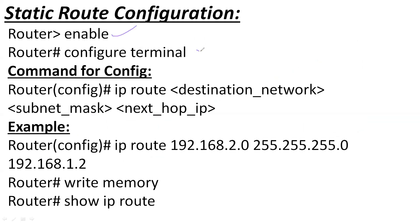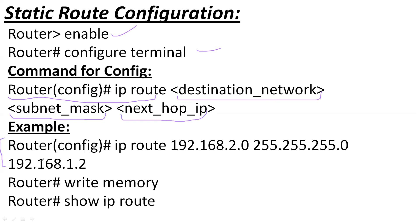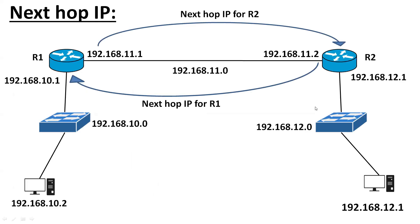Now, how can we configure static routing? First, go to global configuration mode — enable, configure terminal — then put the command 'ip route', followed by the indirectly connected network information, the subnet mask of that network, and the next-hop IP address. For example, if we are configuring the network 192.168.2.0, first define the network, then the subnet mask, then the next-hop address. The command 'write memory' saves the configuration, and 'show ip route' displays the routing table.